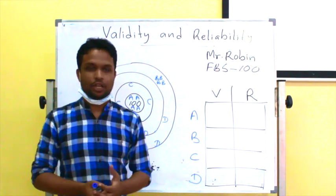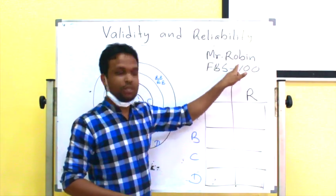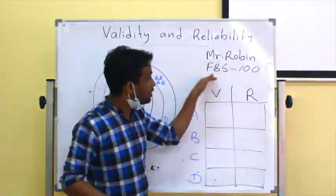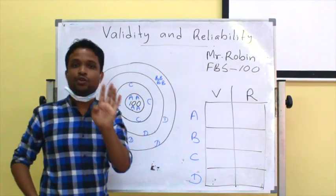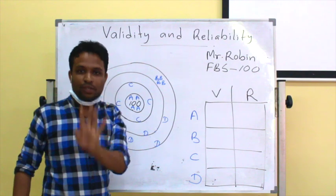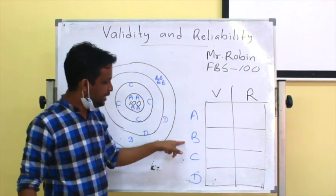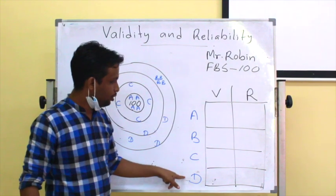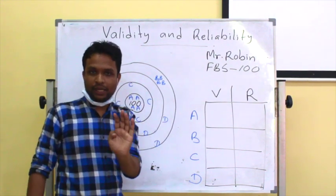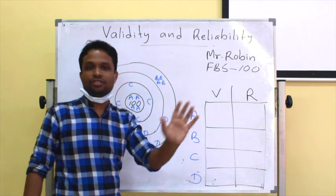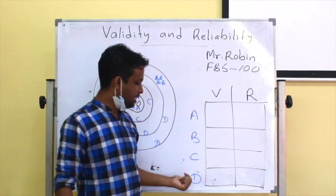To understand these concepts we have a volunteer whose name is Mr. Robin Hood. His fasting blood sugar level is 100, and we have four screening tests — A, B, C, and D — to measure Mr. Robin's blood sugar. We have measured his blood sugar level four times from each test.